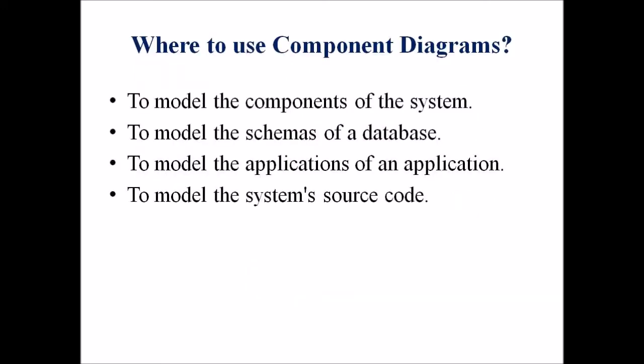There arises a question: where to use a component diagram? The component diagram is a special purpose diagram which is used to visualize the static implementation view of a system. It represents the physical components of a system, or we can say it portrays the organization of components inside the system. The components such as libraries, files, executables, databases, data structures, etc., first need to be organized before implementation.